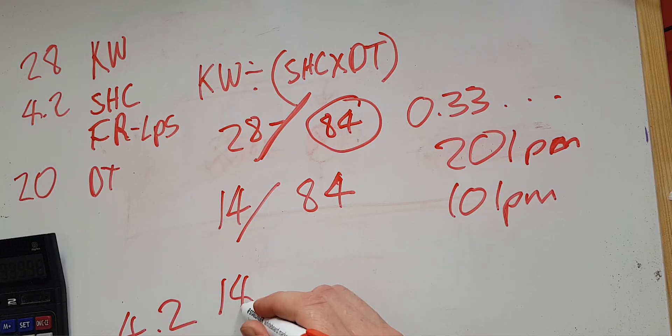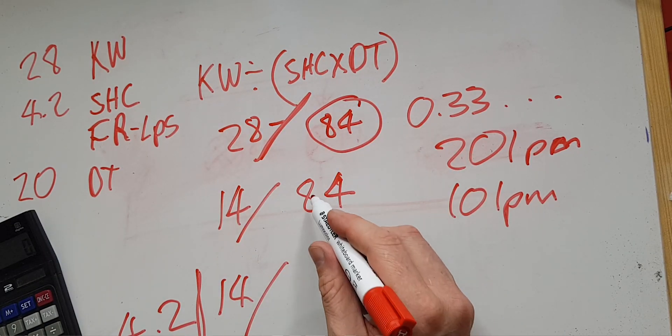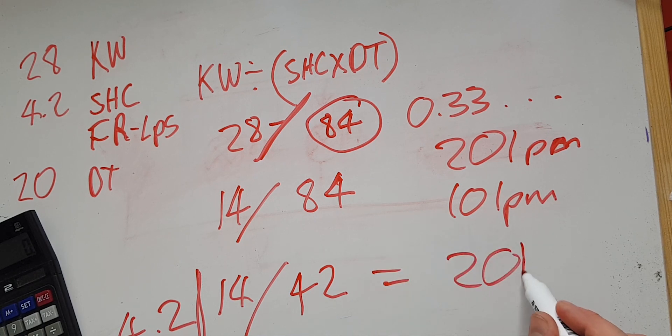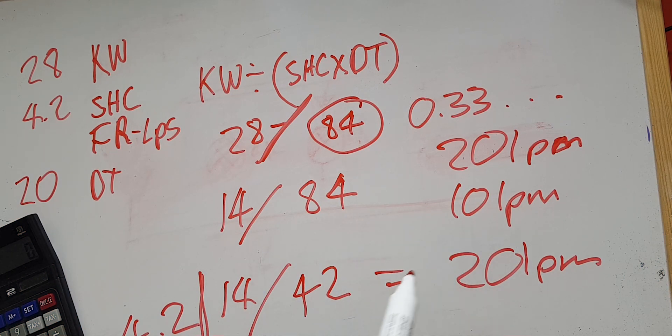If we want to have underfloor heating and it's 14 kilowatts, and we're going to run the underfloor heating at a delta T of 10, we would do 4.2 times 10 equals 42, and then we get an answer of 20 liters a minute. Because although we've kept our load the same, the delta T across the flow and return is halved. For it to lose less heat, you have to run the pump twice as fast — so you're getting twice the amount of flow, double the flow, you half the delta T.